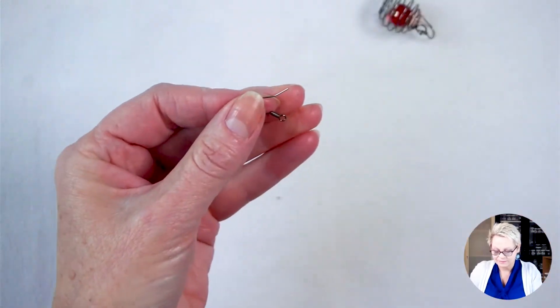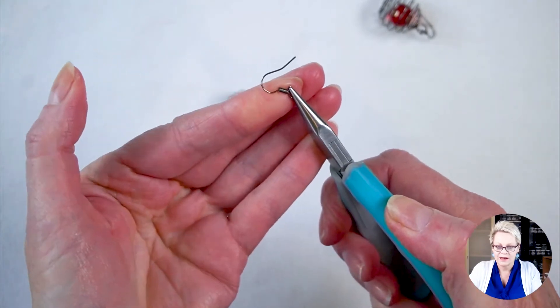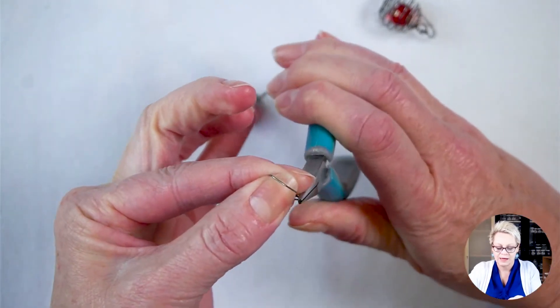Grabbing my ear wire. Holding it on the side, the loop on the side, and the rest between my thumb and my forefinger. Rotating my pliers down.